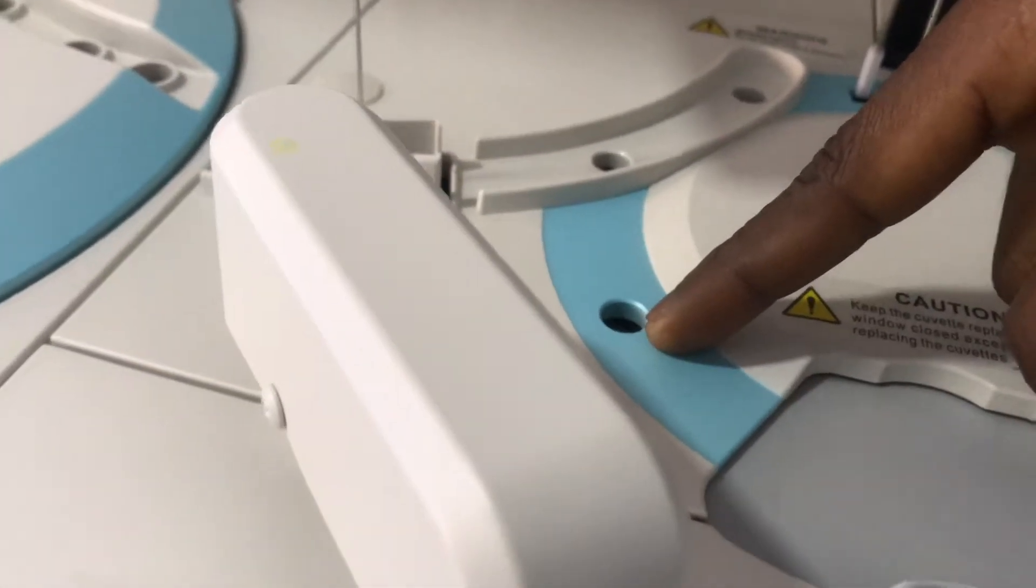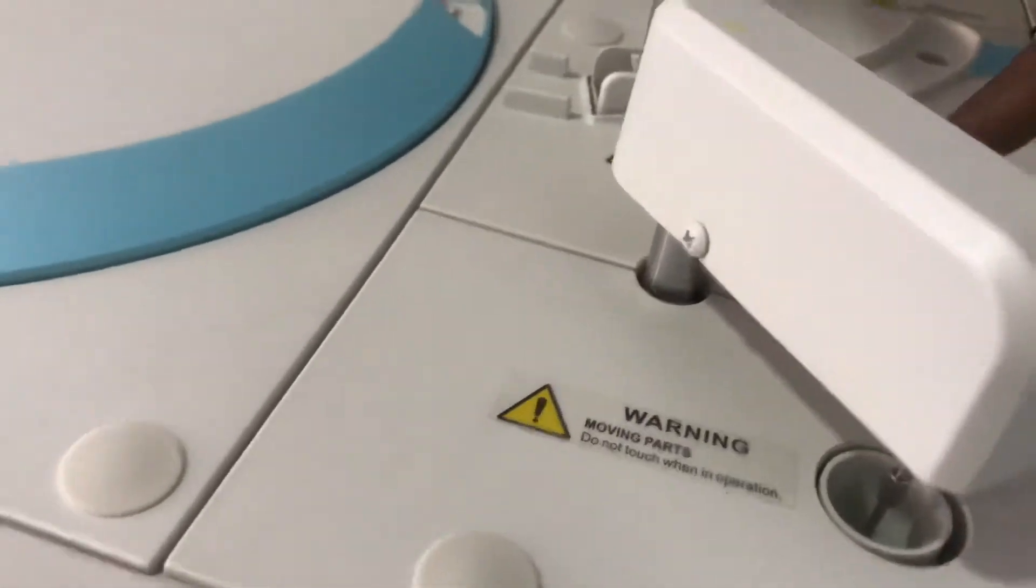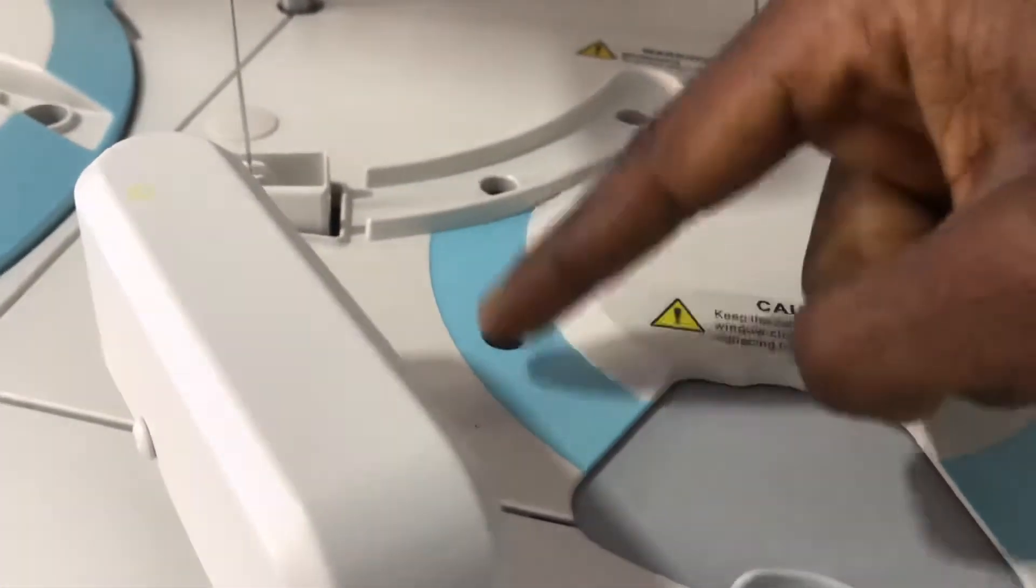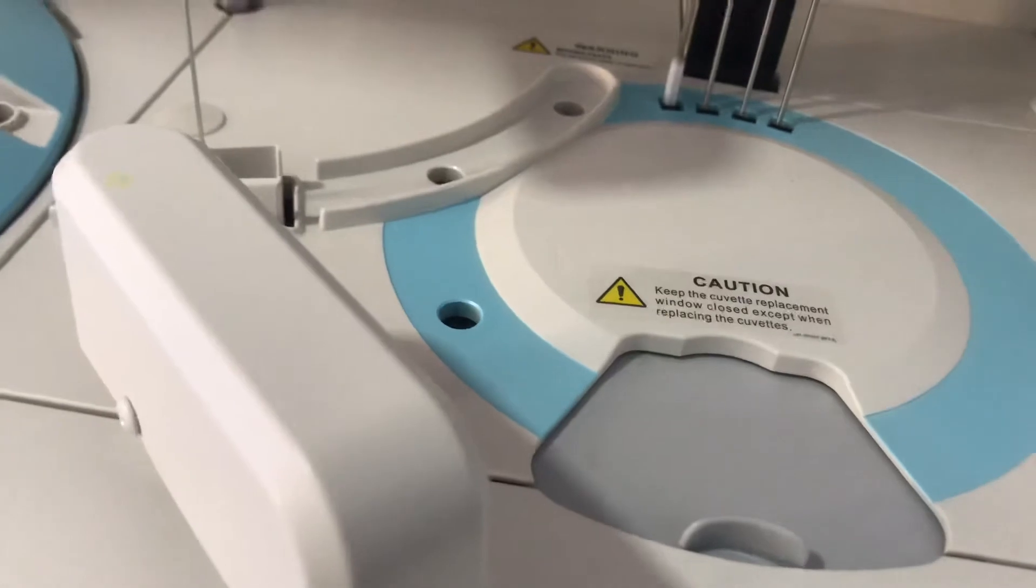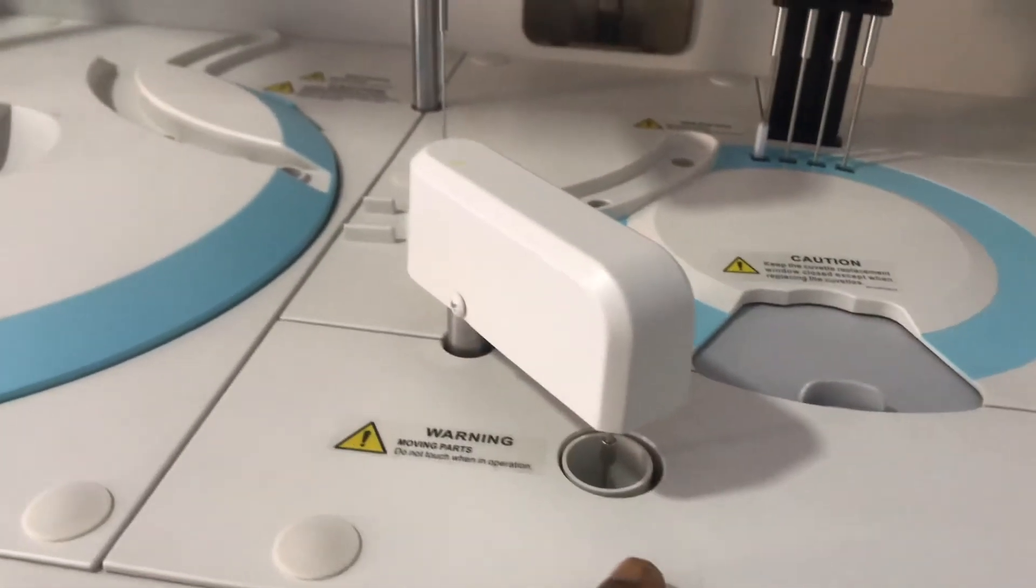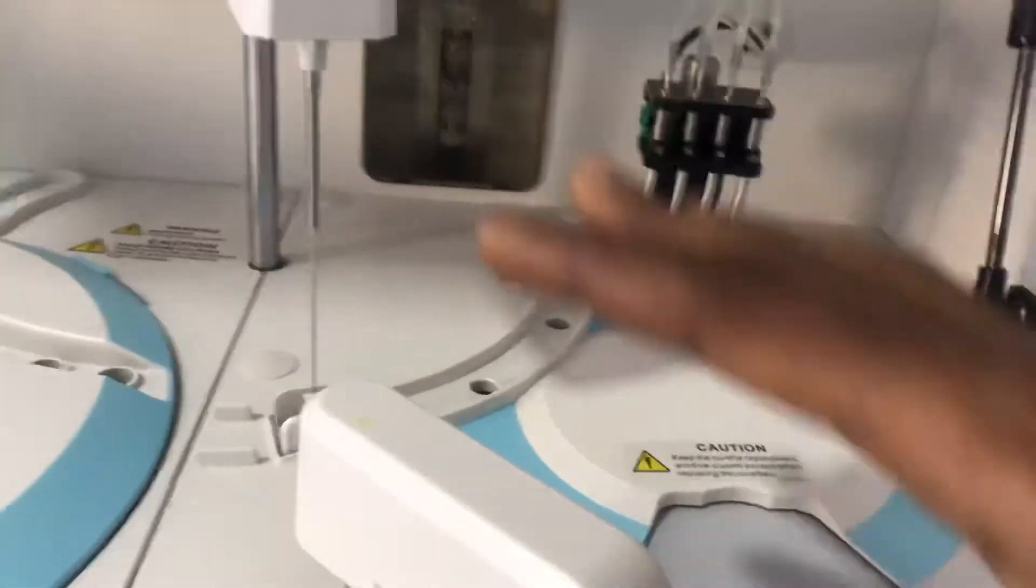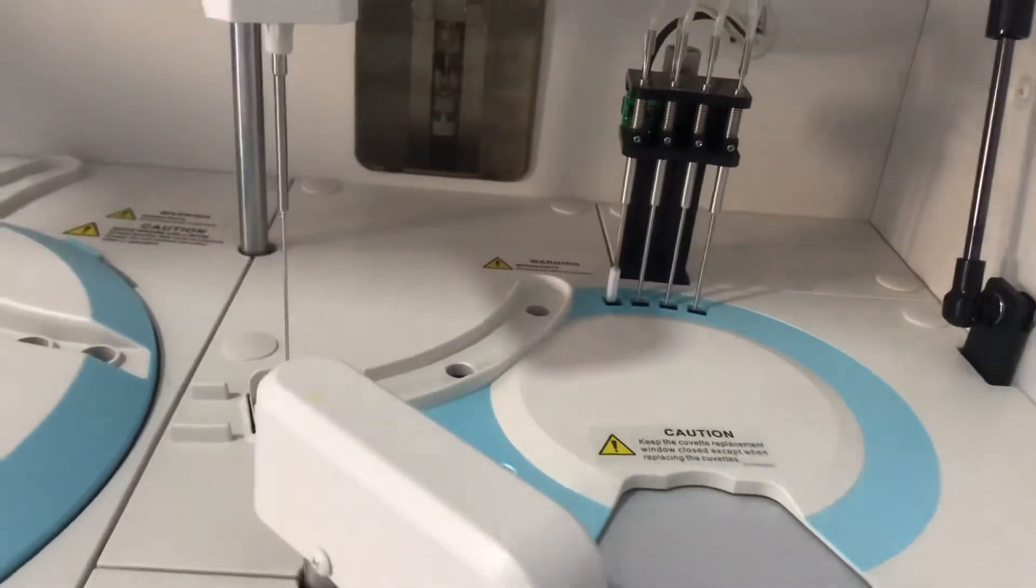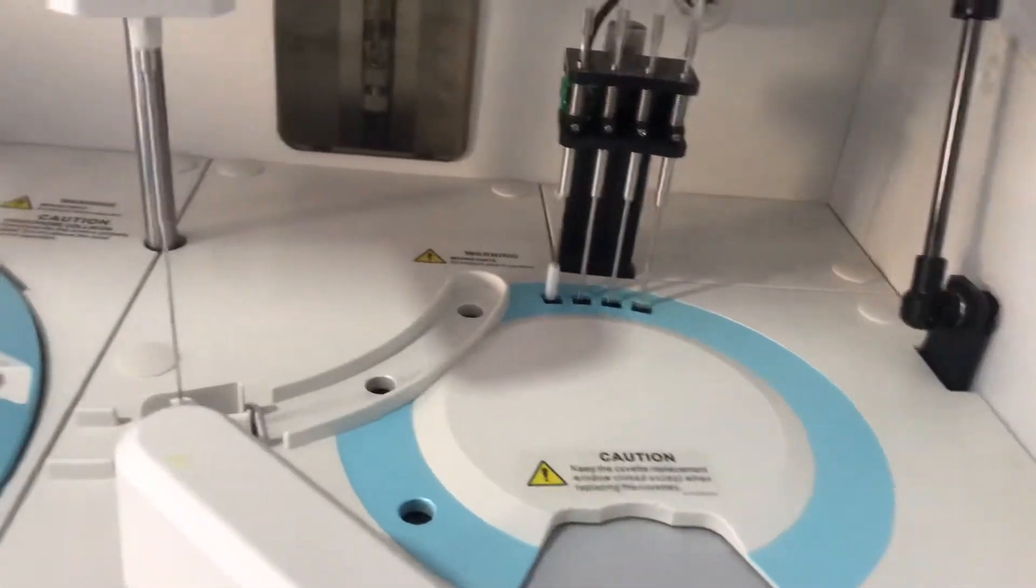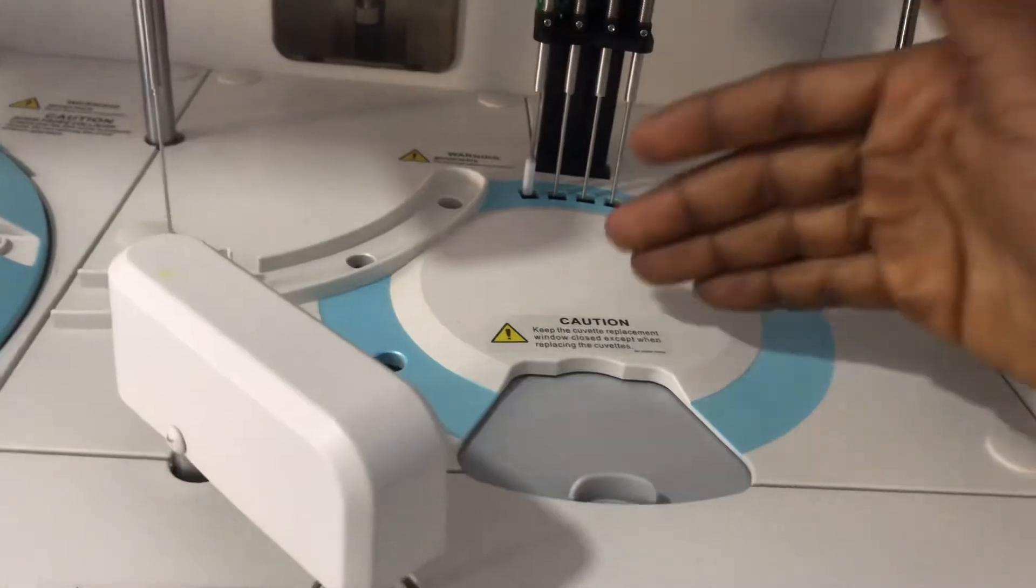This is where the mixing actually occurs. It moves to this position and then the mixing is done, and then it comes back to the wash well where it gets washed. Now let's come to this side of the machine.